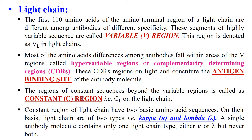The lower portion of the light chain is known as the constant region, because the amino acid sequence remains constant among antibodies. On the basis of the constant region, light chains are generally of two types: Kappa and Lambda. A single antibody can have either a Kappa or Lambda light chain, but can never contain both.